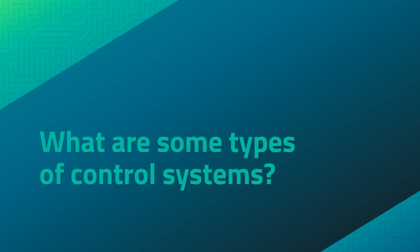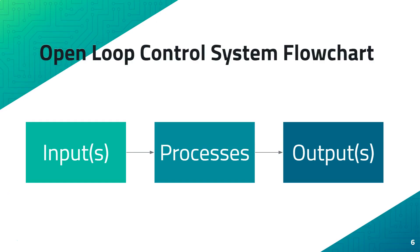So what are some of the basic types of control systems? There are two big categories: closed loop and open loop. Open loop control systems have inputs that are not affected by the outputs whatsoever. Following the flow chart, there would be inputs, a set of processes in the system, and the output that results from the system — there's no connection between the output and the input.